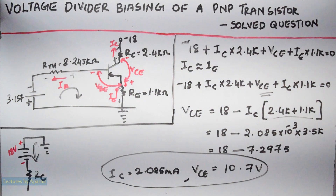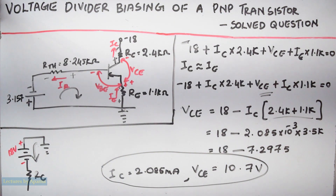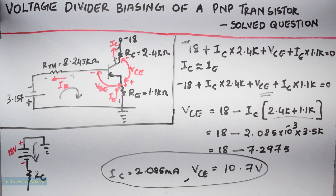This is how we solve a question from a voltage divider bias circuit with a PNP transistor. If this video has helped you, please do subscribe to my channel, and don't forget to like and share this video. Thank you.